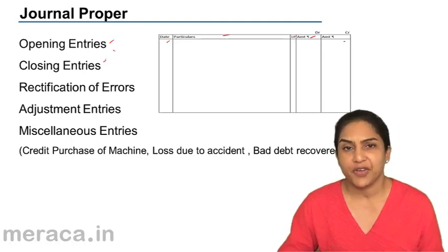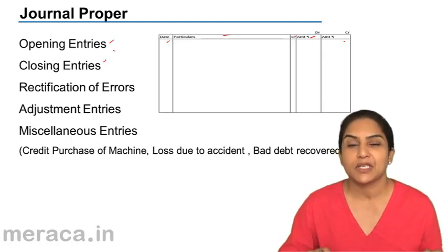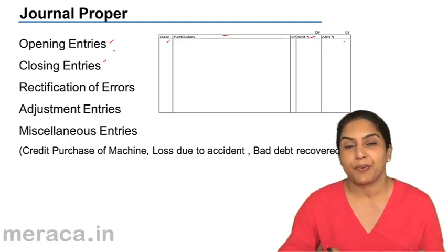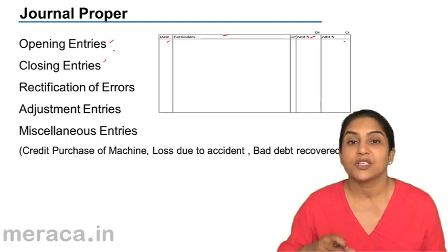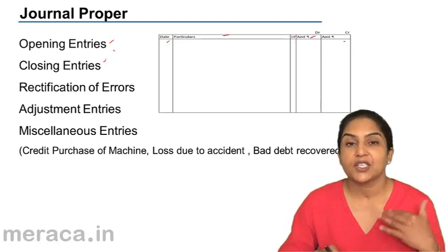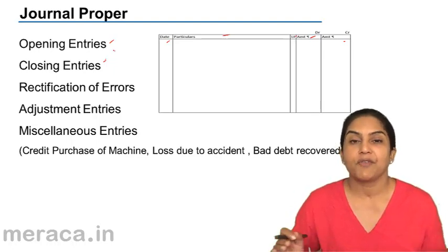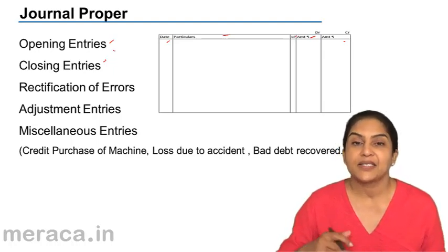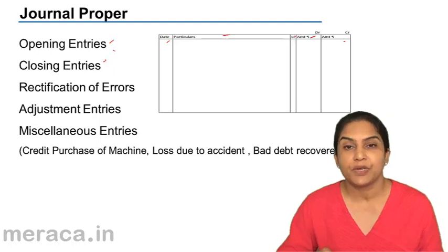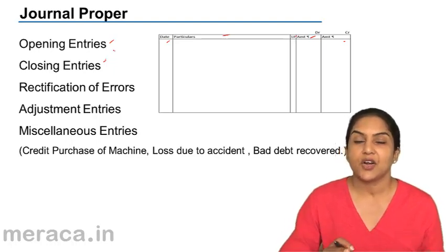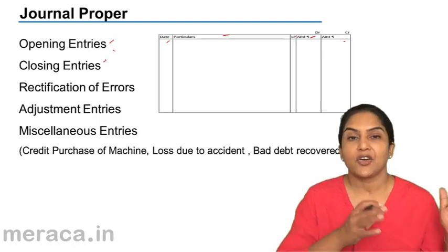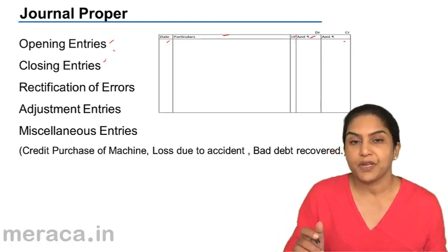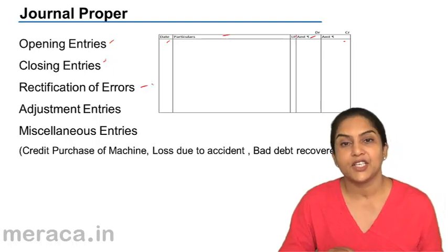Next, rectification of errors. Sometimes when we make mistakes — like wages paid for construction of machinery was debited to wages account instead of machinery account. So we have made a mistake, and now we have to rectify this error. The rectification entry would be: machinery account debit to wages account. Such a transaction cannot be recorded in any of the other subsidiary books, so it would be recorded in the journal proper.